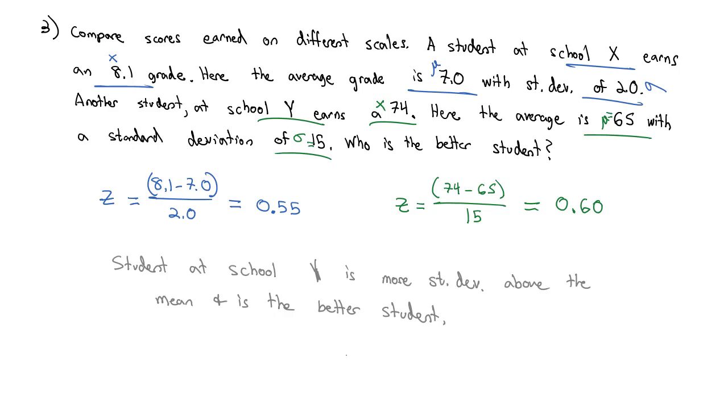Z-scores tell us how each point compares to the mean in a measurement of standard deviations away from the mean.